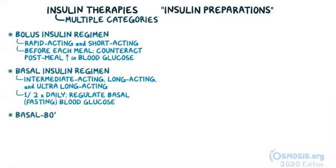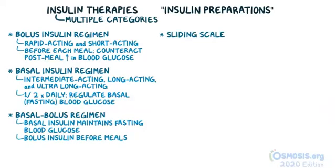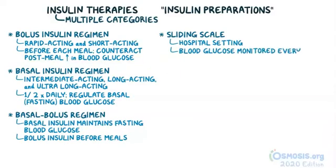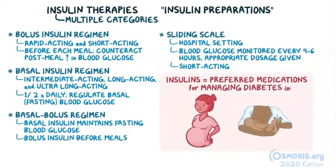There's also basal bolus regimen where a basal insulin is used to maintain fasting blood glucose levels and a bolus insulin is taken before meals. Lastly is the sliding scale regimen, typically reserved for hospital settings where a person's blood glucose level could fluctuate rapidly due to metabolic stressors like infections or other illnesses. Every 4-6 hours the person's glucose level is measured and an appropriate dosage of short-acting insulin is given. Insulins are the preferred medications in managing diabetes in pregnancy and breastfeeding.